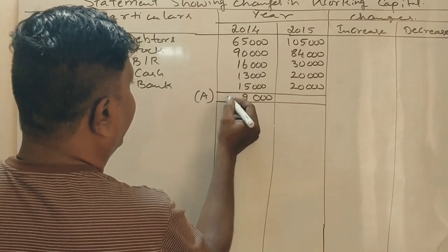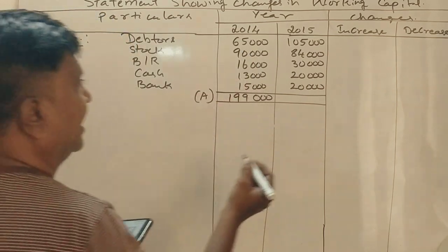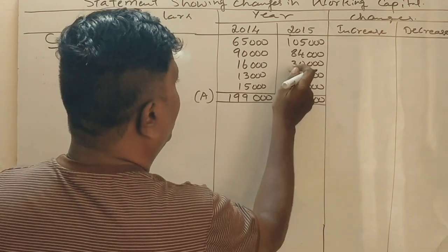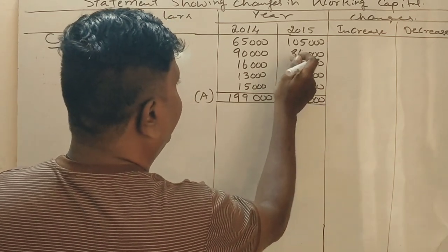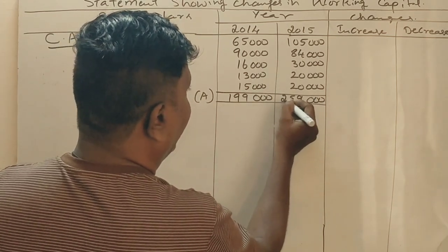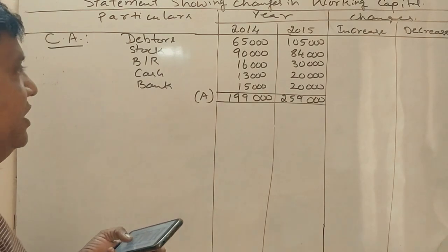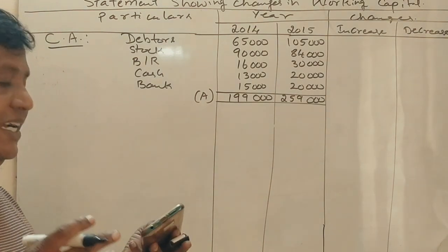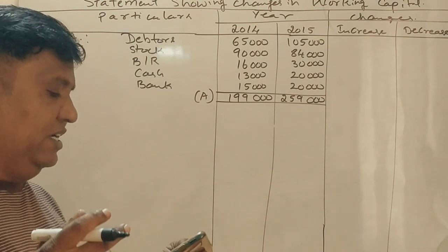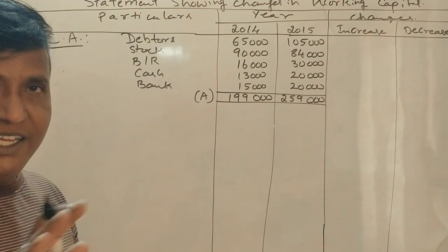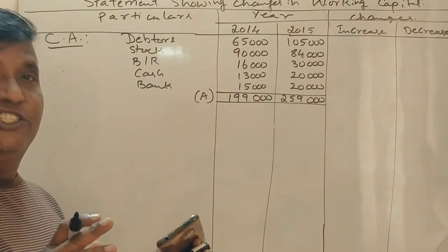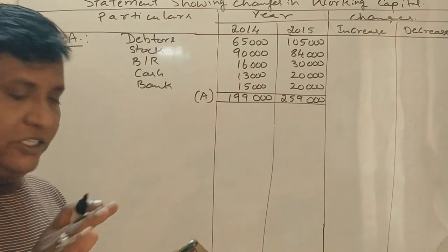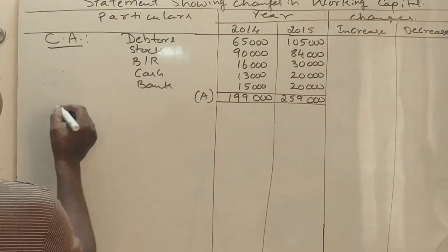The total current assets come to 1,99,000 for the first year and 2,59,000 for the second year. Now moving to current liabilities — share capital, general reserve, and profit and loss account are not current liabilities.